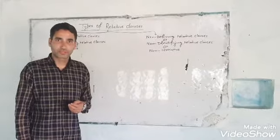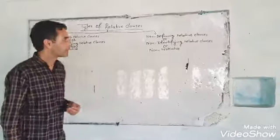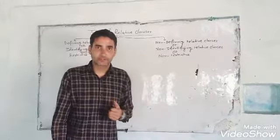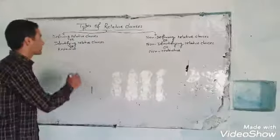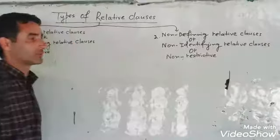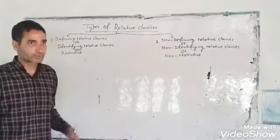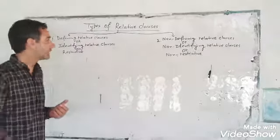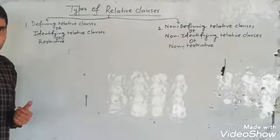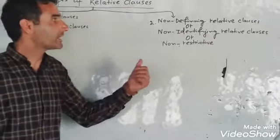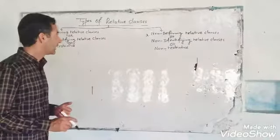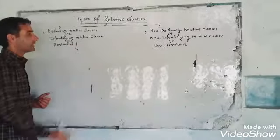Today our topic is types of relative clauses. There are two main types: number one, defining relative clauses, and number two, non-defining relative clauses. In some grammar books they have other names as well — defining relative clauses are also called identifying or restrictive relative clauses, and non-defining relative clauses are also called non-identifying or non-restrictive relative clauses. Let us take up defining relative clauses.